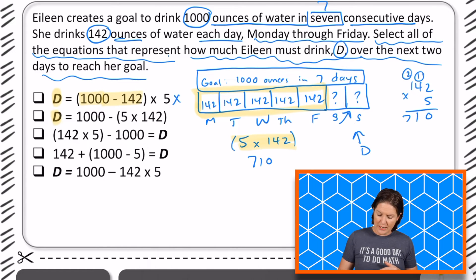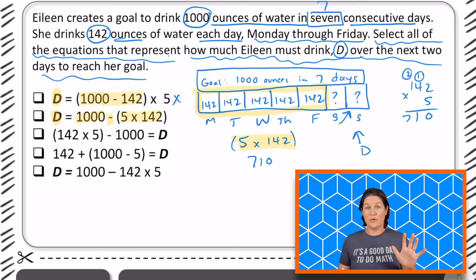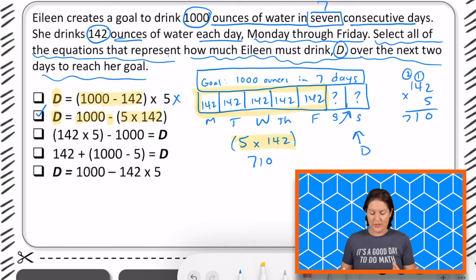Next, to figure out how much she needs to drink, should we take 1000, her goal, and subtract what she has already consumed for those five days? Yeah, that's what we were saying, right? So let's go ahead and keep that one. Let's try to interpret the next one.